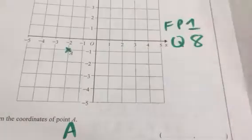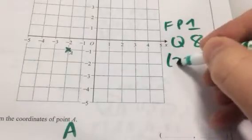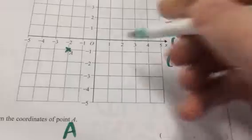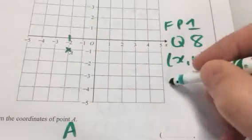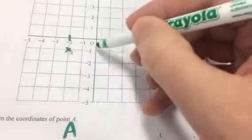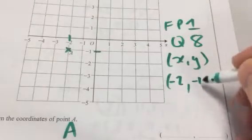Now A is there. We always put coordinates x, y. So along the x-axis we can see it's minus 2, and then y, it's minus 1.